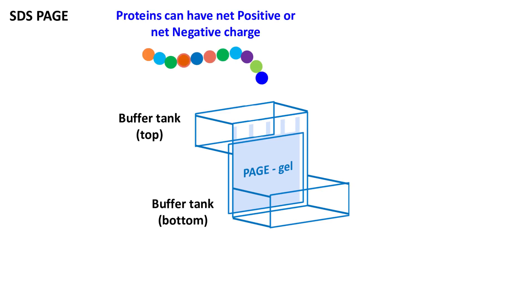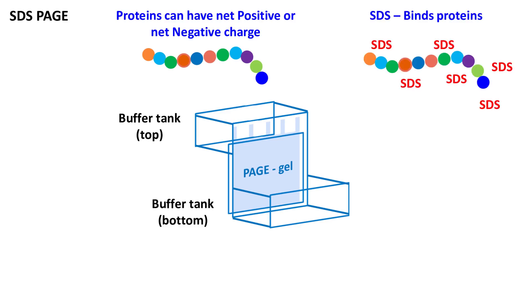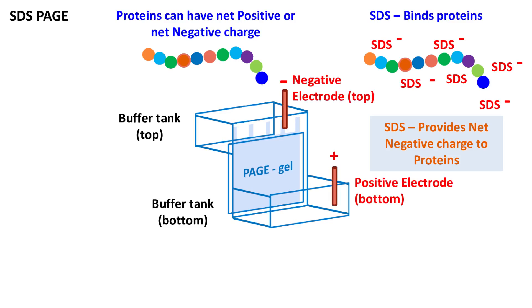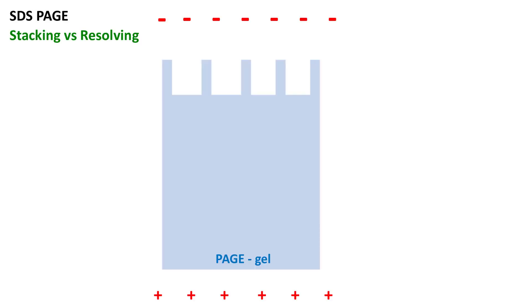Proteins can either have positive or negative charge depending on the amino acids present in them. The use of SDS ensures that all the proteins in the sample attain a net negative charge. Because all proteins have net negative charge, the negative electrode is placed on top and the positive electrode at the bottom. When the electric field is switched on, the proteins move from the negatively charged electrode to the positively charged electrode.